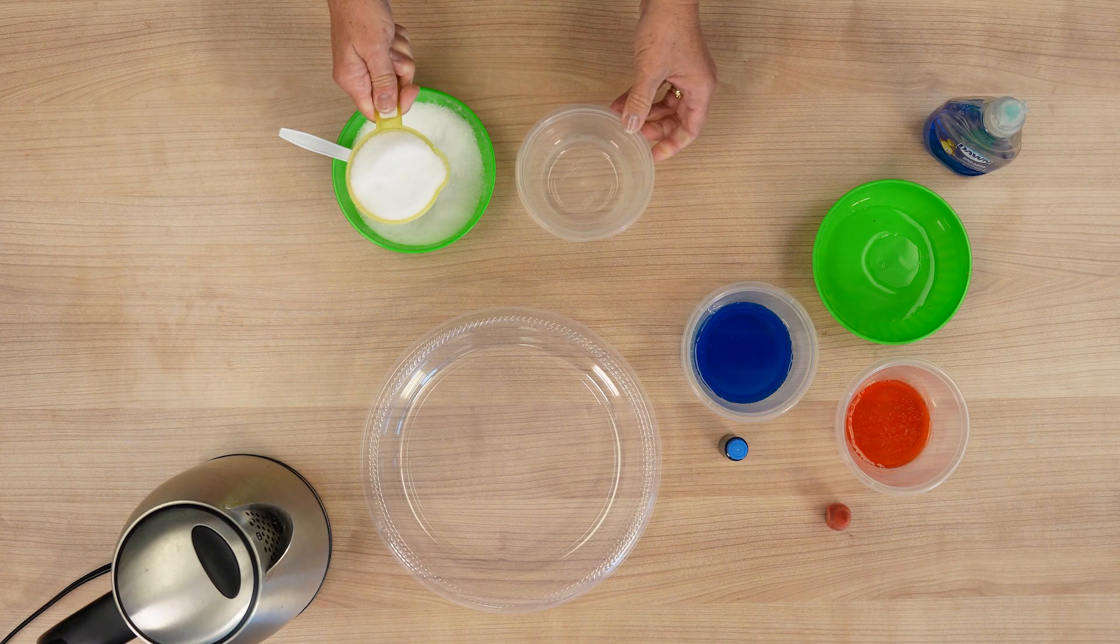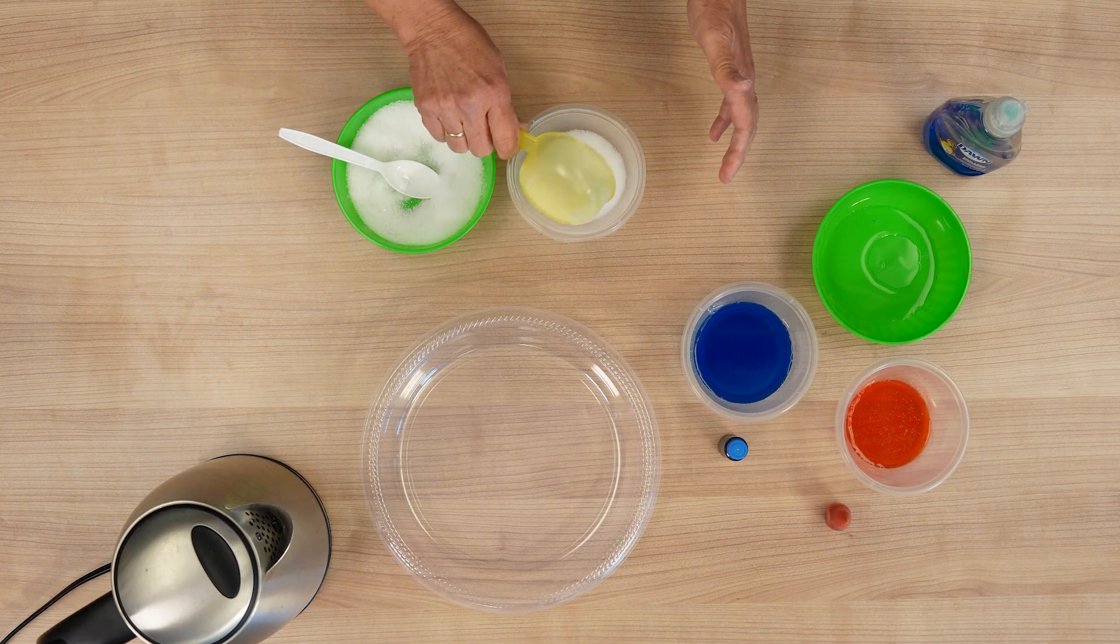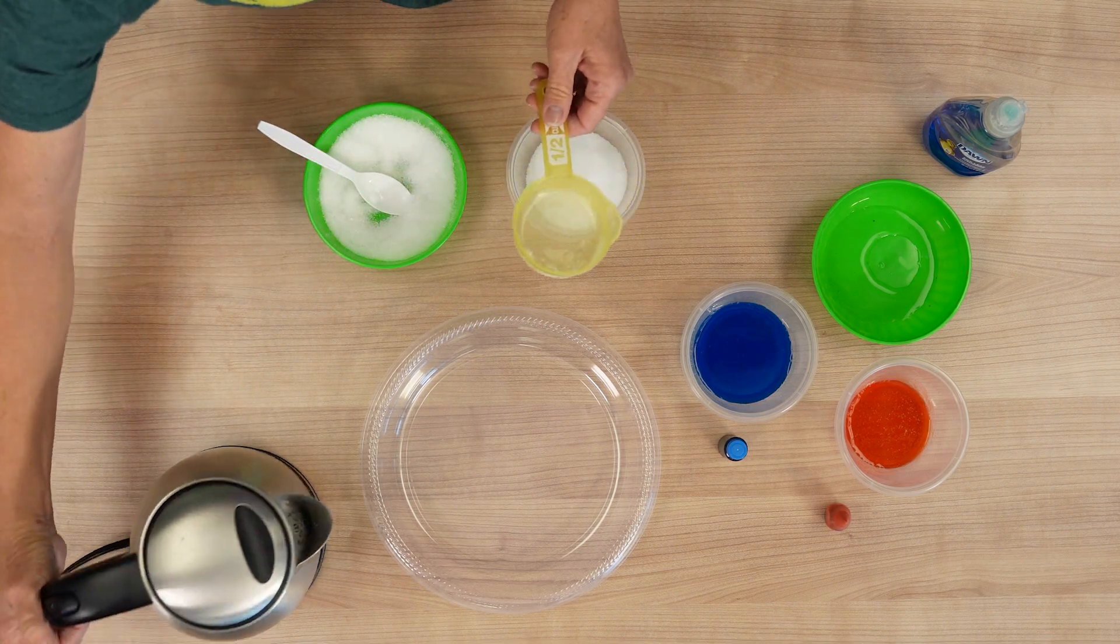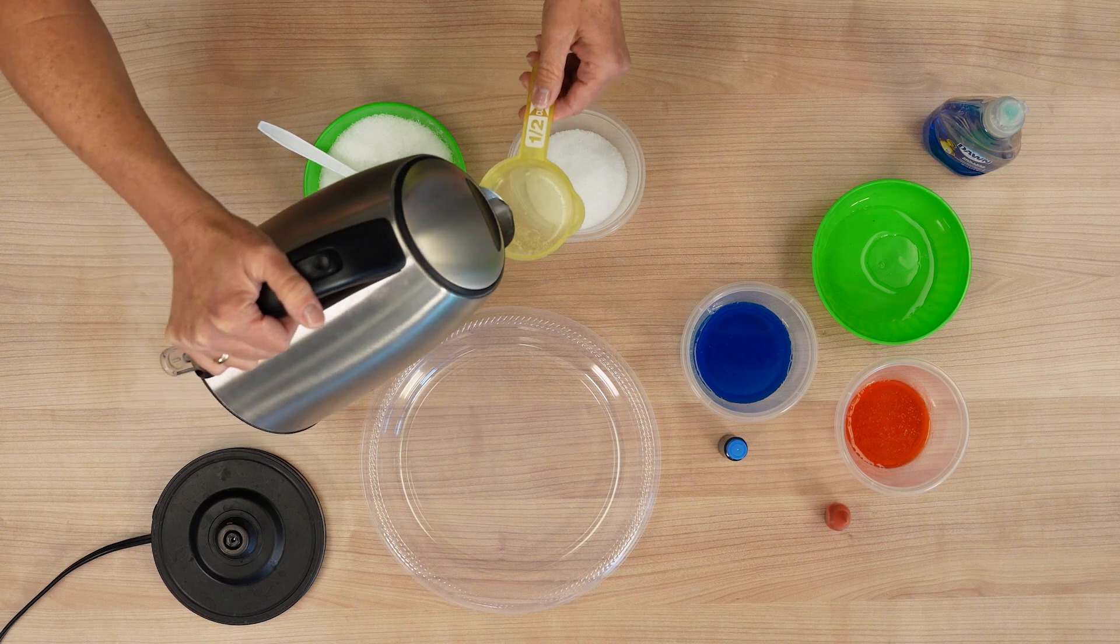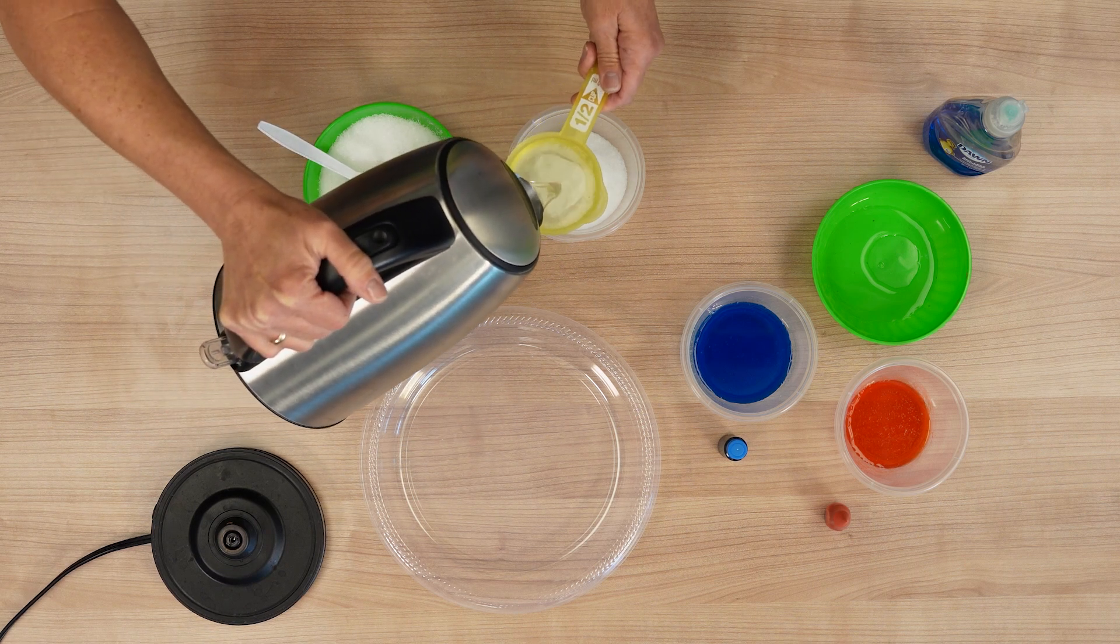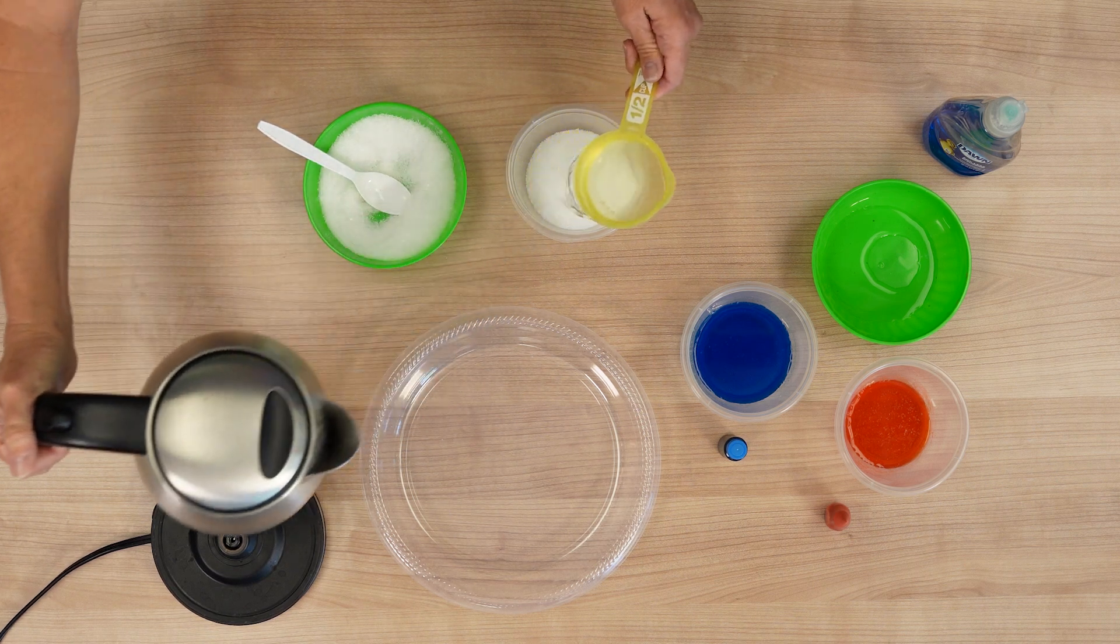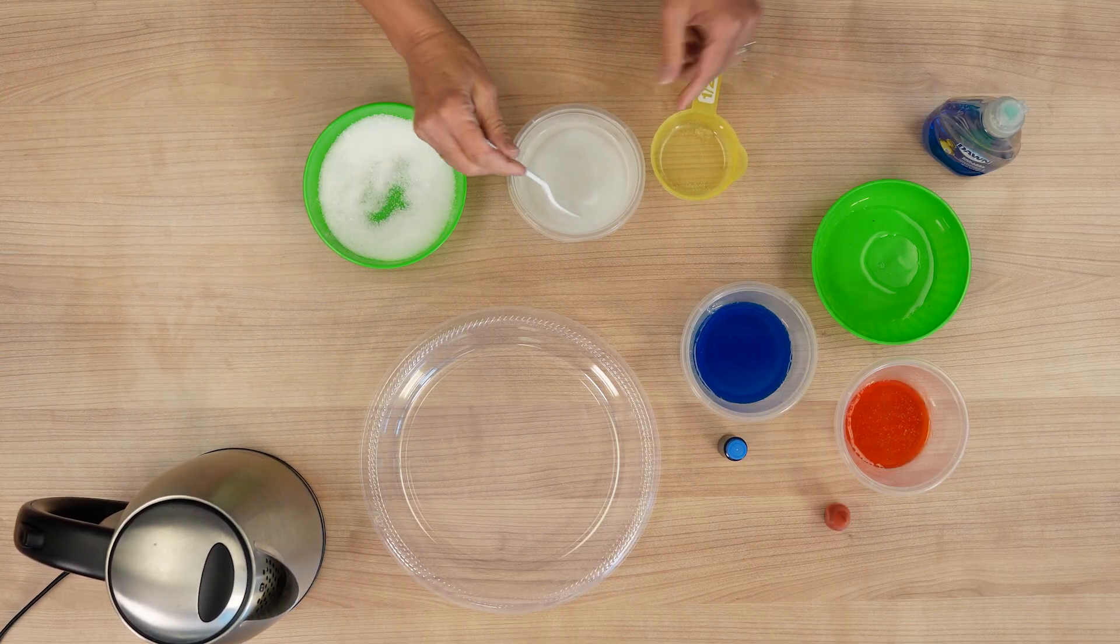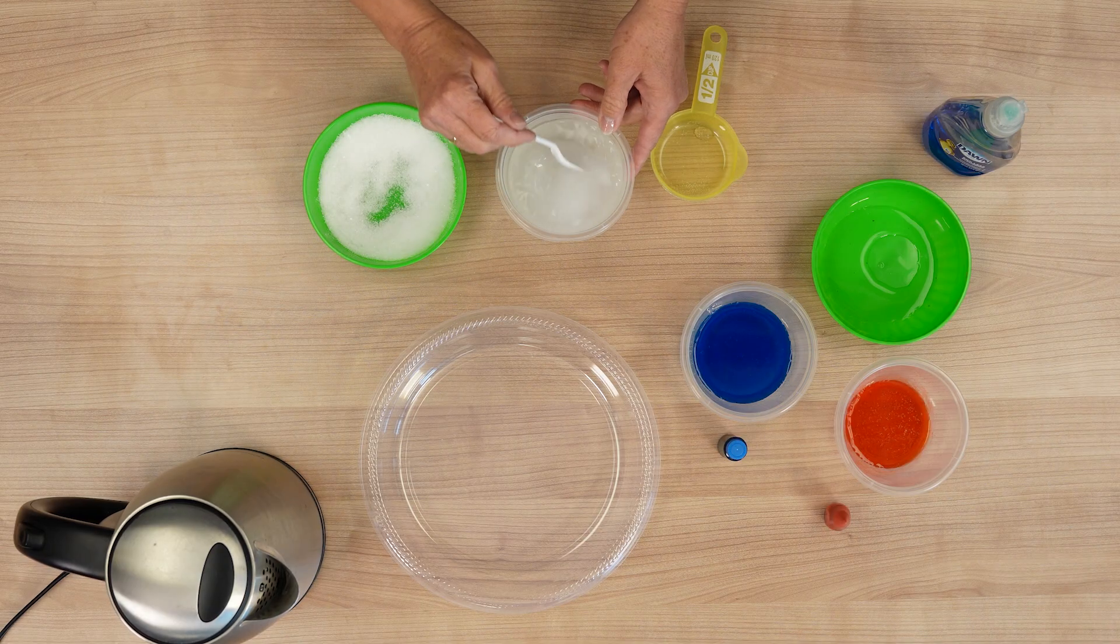I'm going to add those in, and then I'm going to add an equal part of my boiling water. I just had a tea kettle here, so super easy. We're going to add that in, and then you want to stir it until it's all dissolved.